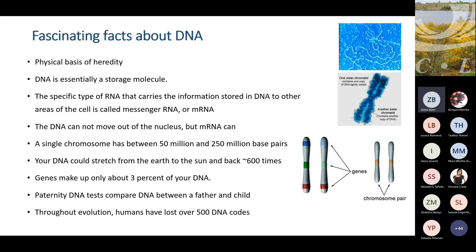Also, when you want to find out whether a plant or child belongs to a specific father, that's called paternity testing. You know who the mother was, but you have to take the DNA from the father, compare it to the child, match that up, and then you know which one was your pollinator - or in the case of humans, the father. Interestingly, throughout evolution, humans have lost over 500 DNA codes.